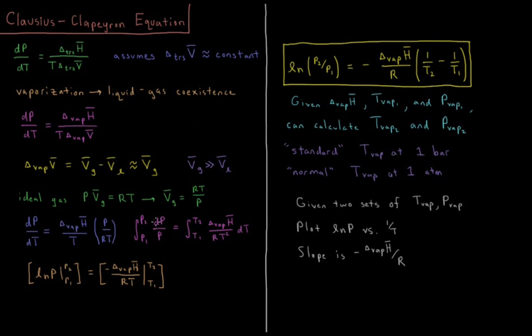This integral is the natural log of P, so ln P2 minus ln P1 at that evaluation. Over here, the integral of something times 1 over T squared is the same thing times minus 1 over T. This is minus delta vap h-bar over RT evaluated at T1 and T2.